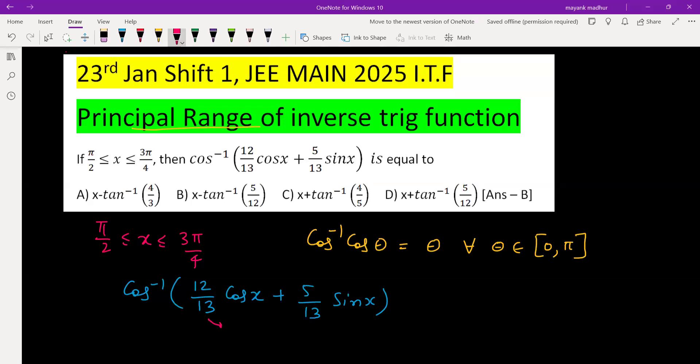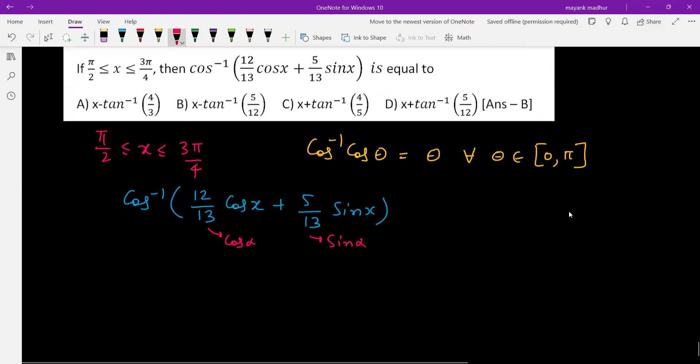Whenever we need to do that, we consider one term as cos and the other as sine. Luckily we have these two values which are fitting in the format of cos²α + sin²α = 1. Otherwise when we have a linear combination of sine and cos, we divide by √(a² + b²) to bring it in that format. This time they are already in that format.